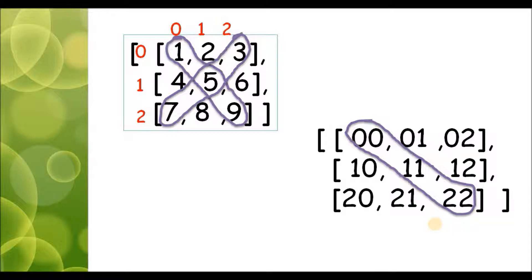If you observe the index position of the primary diagonal elements, you can see the positions 0,0 — 1,1 — and 2,2, where the first number represents the row and the second represents the column. There is a clear pattern: the row number is equal to the column number. This pattern can be used with nested loops to extract and sum the elements at diagonal positions.